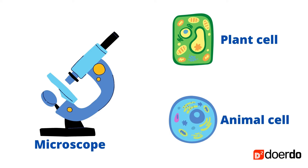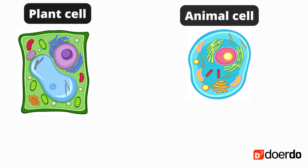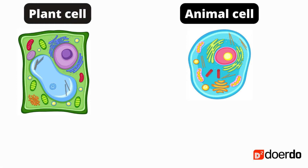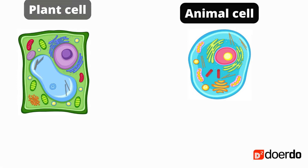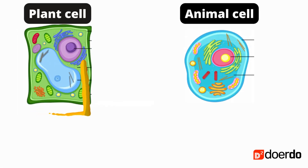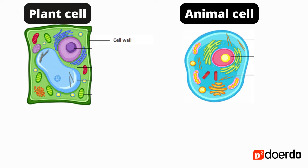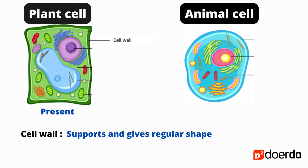Let's see a plant cell and an animal cell in detail. The outer layer that protects the cell is called the cell wall. It is present in the plant cell and supports and gives the cell its regular shape.